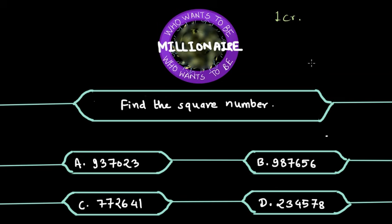And this question is find a square number, and there are four numbers given, but every number is a six digit number and you have no way to identify whether it's a square number or not. So let's say you have some lifelines like 50-50. If you select the 50-50 lifeline, two of the four options just vanish and you are just left with two options.